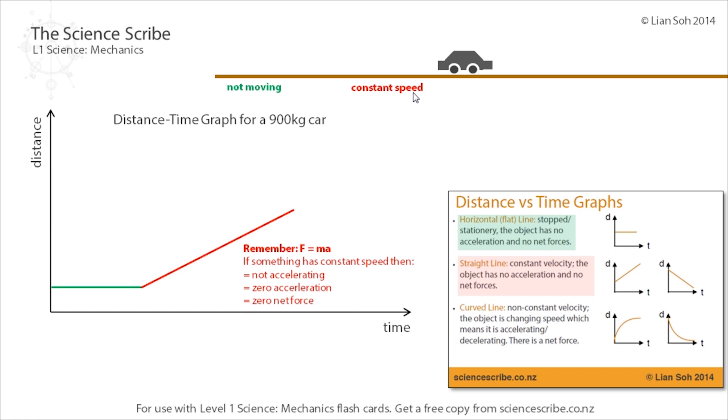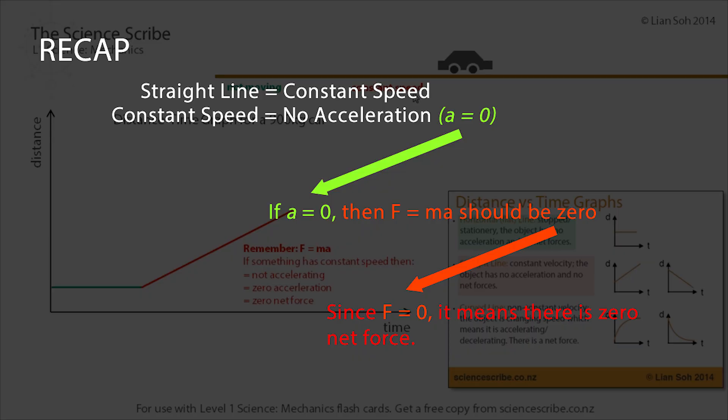If you have a constant speed there's no change in speed, there's no change in velocity. And because there's no change in speed or velocity, it means that this car isn't actually accelerating. Now if there's no acceleration, it means there's zero acceleration.